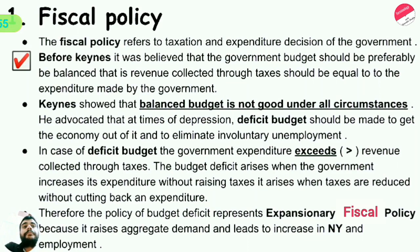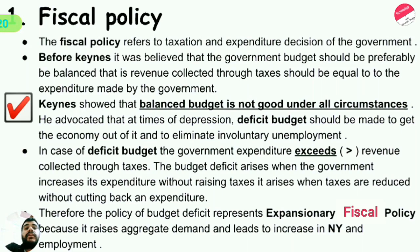Before Keynes, it was believed that the government budget should preferably be balanced — that is, revenue collected through taxes should be equal to the expenditure made by the government. Keynes showed that a balanced budget is not good under all circumstances. He advocated that at times of depression, a deficit budget should be made to get the economy out of it.